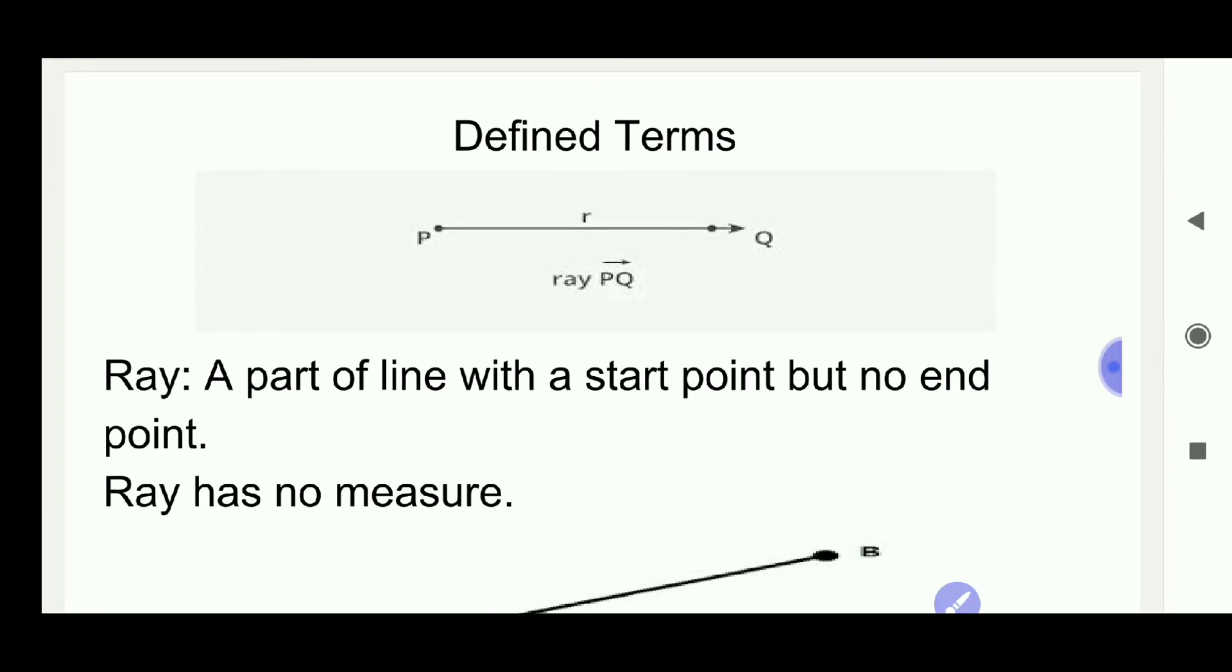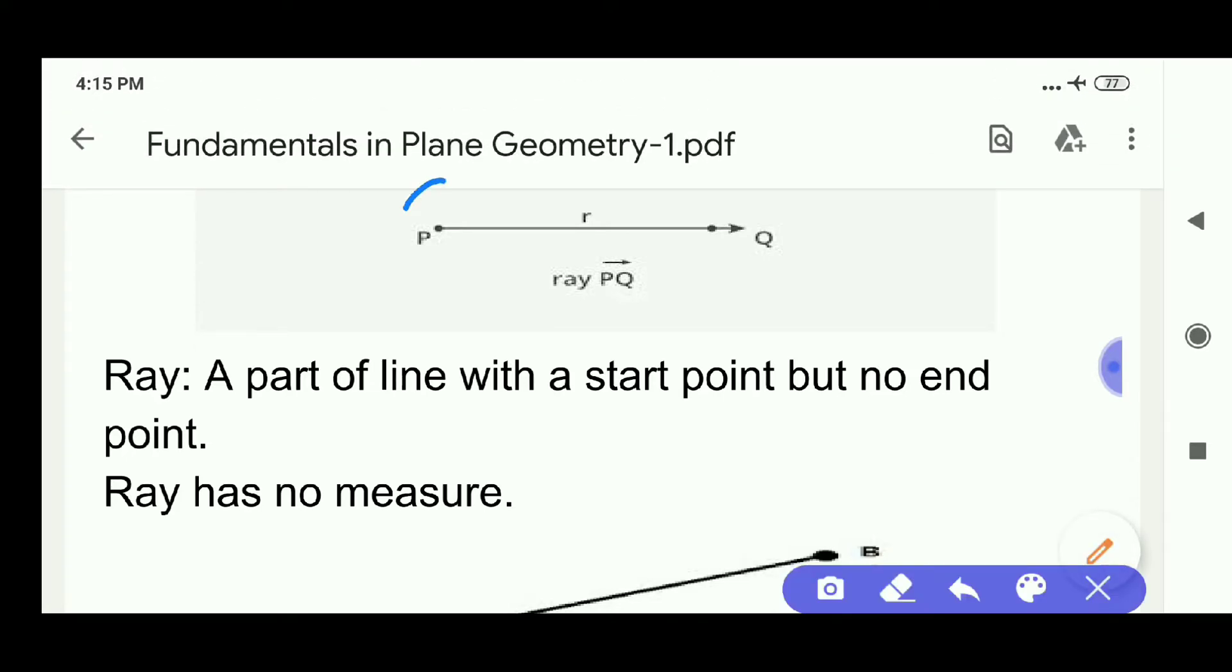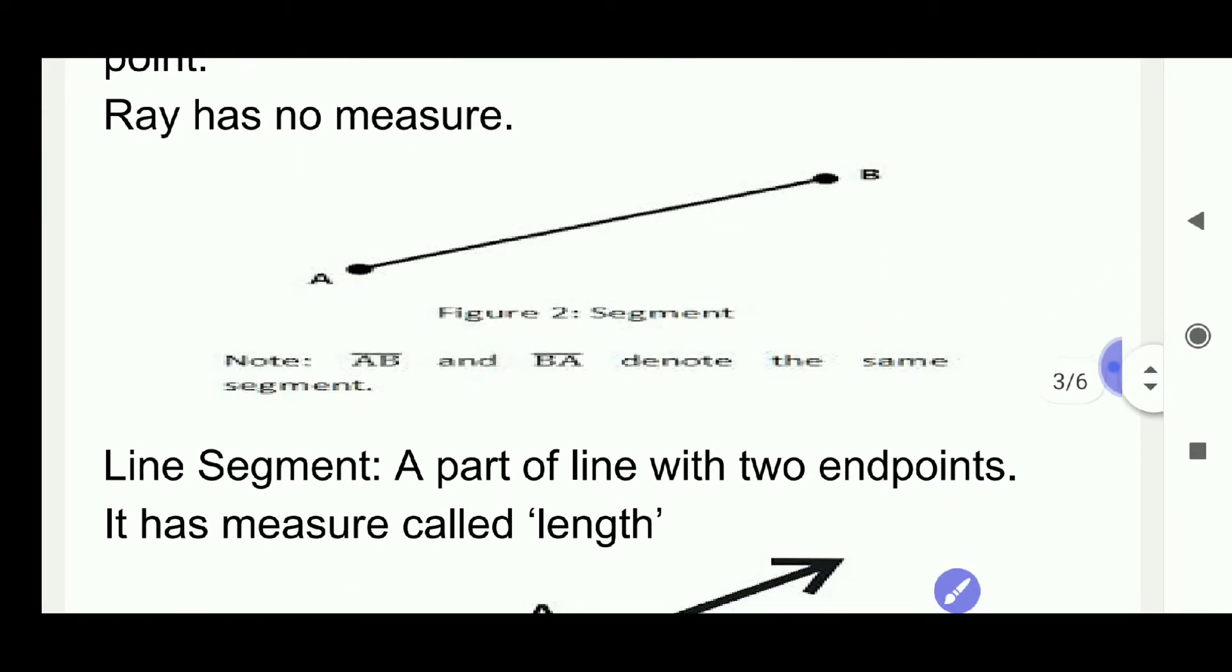Defined terms. Ray. A part of line with a start point but no end point. Ray has no measure. We cannot measure ray. Line segment. A part of line with two end points. It has measure called length.